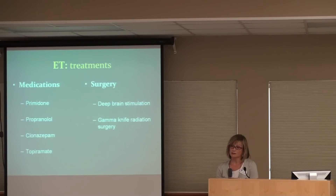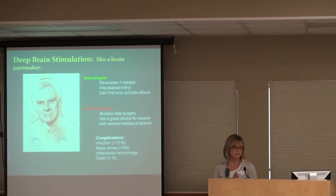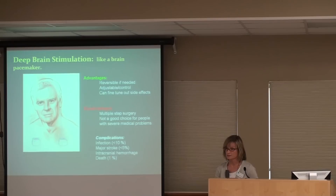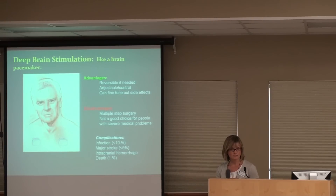There are two surgical options I'm going to talk about today. One is called deep brain stimulation, and the other procedure, done less commonly but still available, is called gamma knife surgery. Deep brain stimulation you may have heard of — it's also a treatment for Parkinson's disease, but it actually works better for essential tremor. We usually consider it in people who are really disabled by their tremor, who can't write their name or write checks. Surgery is a really viable option to consider in that situation.